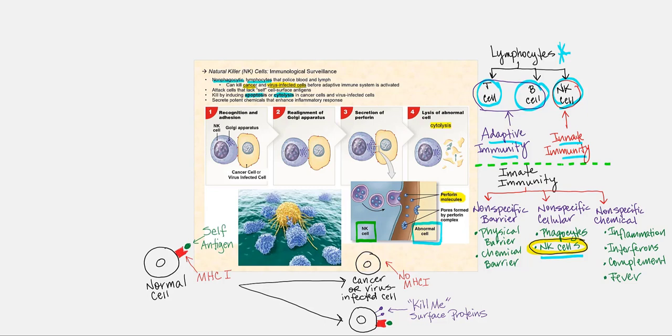What exactly are NK cells looking for? Such things as cancer cells — a cancer cell was once a normal cell that has undergone several DNA mutations, transforming it into a cancerous cell. Another type of abnormal cell would be one infected by a virus. Viruses are intracellular parasites that invade our DNA, take over the cell, and cause it to produce more viruses. NK cells do this even before adaptive immunity is activated.